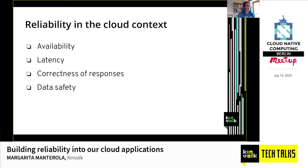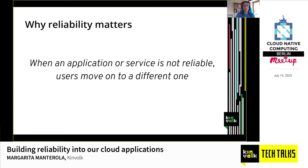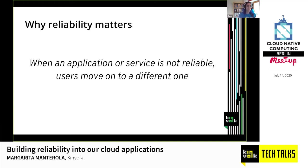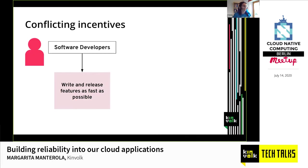This is why reliability matters — if an application is not reliable, users move on to a different one. It may not be the most fun thing to develop, but it lets us keep our users. An application without users is not relevant, so we need to make it reliable. This all seems obvious, so why are we even talking about it? Isn't it clear that everything needs to be reliable?